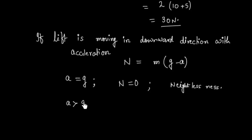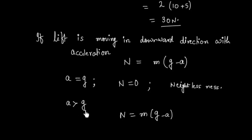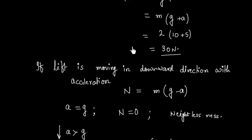If the acceleration a is greater than g, and the lift is moving downward, then N = m(g − a) becomes negative. A negative normal reaction means the force is now acting in the downward direction — you would need to bolt the object down because it has a tendency to go upward.